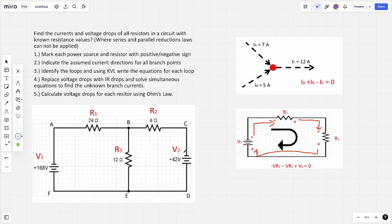And then replacing the voltage drops we're going to use IR, remember V equals IR, Kirchhoff's law. And what we should get is two sets of simultaneous equations.